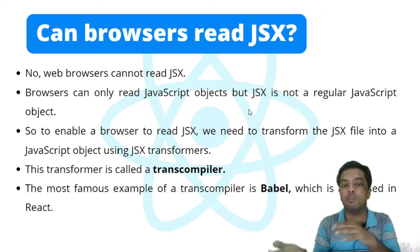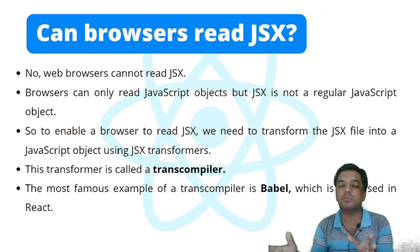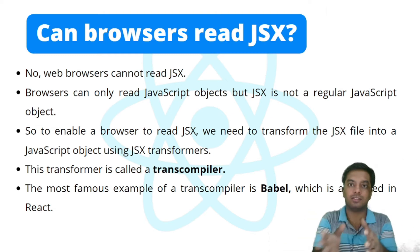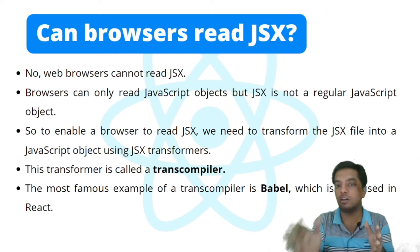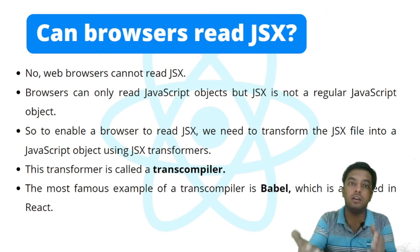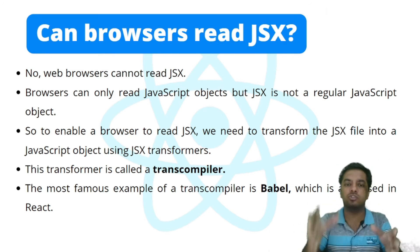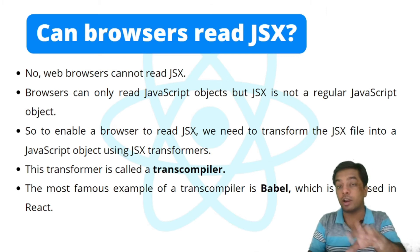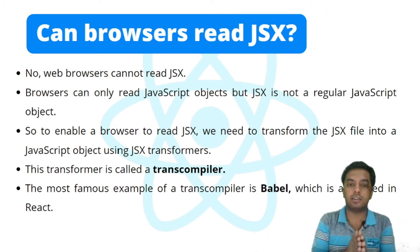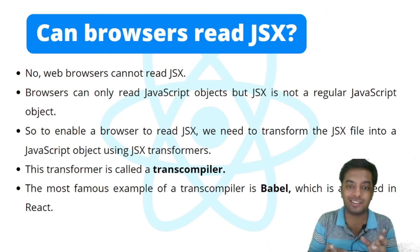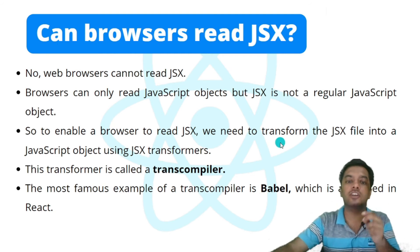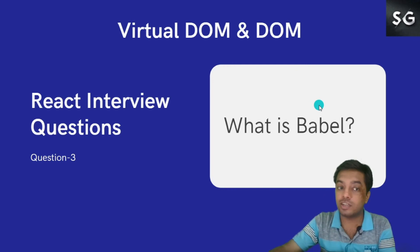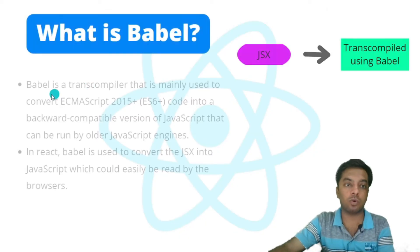This transformation from JSX to a JavaScript object is done using a transpiler. A transpiler is a tool used to convert one form of code into another — here, it converts JSX into JS code. The most famous example of a transpiler is Babel, which is also used in React. If you watched the first video in our series, we saw that using Create React App we get a Babel file — now we know what Babel actually is: it's a transpiler.